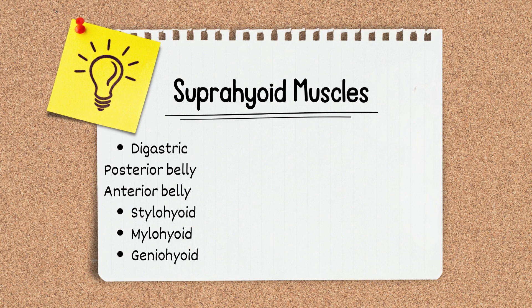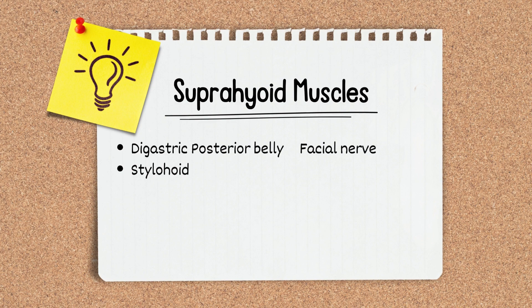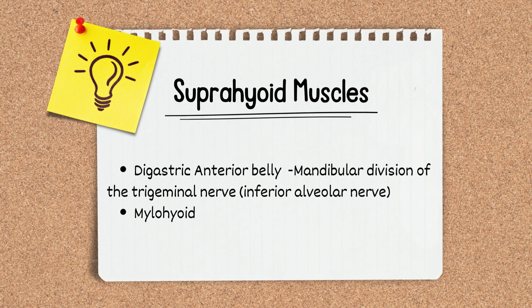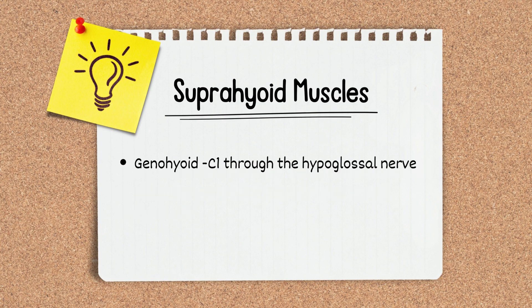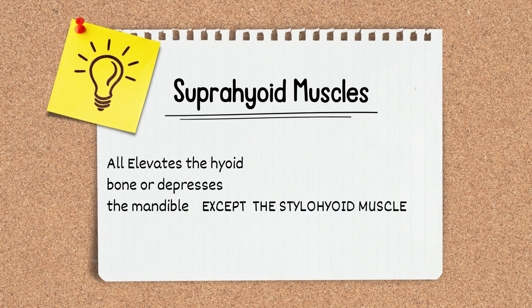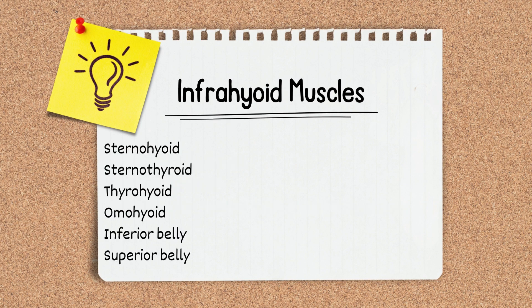The suprahyoid muscles of the neck include the digastric muscle, stylohyoid muscle, mylohyoid, and geniohyoid. The posterior belly of the digastric is supplied by the facial nerve, whereas the mylohyoid nerve, which is a mandibular division of the trigeminal nerve, supplies the anterior belly of the digastric as well as the mylohyoid. Supply of the geniohyoid muscle is through C1 via the hypoglossal nerve. The function of the suprahyoid muscles in general is to depress the mandible or elevate the hyoid bone, except the stylohyoid muscle, which is only responsible for elevation of the hyoid bone.